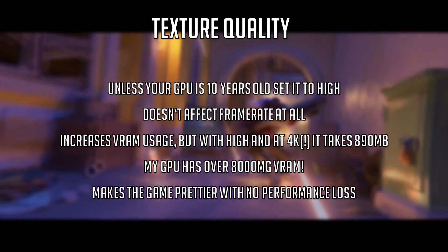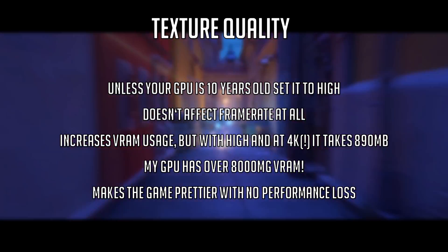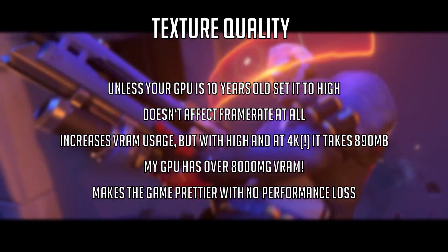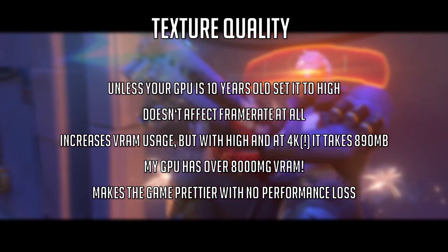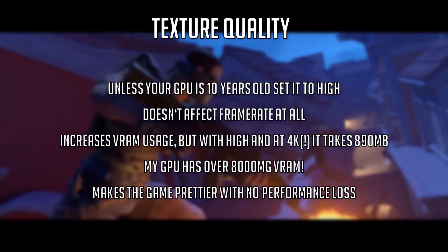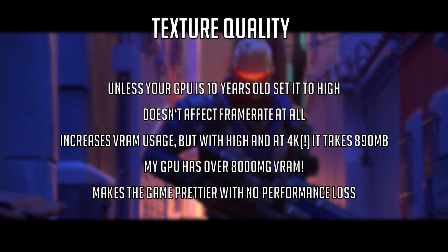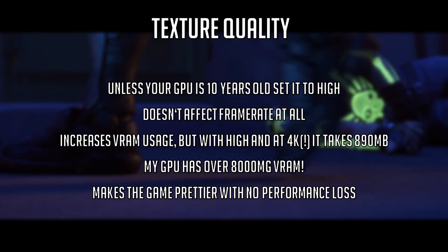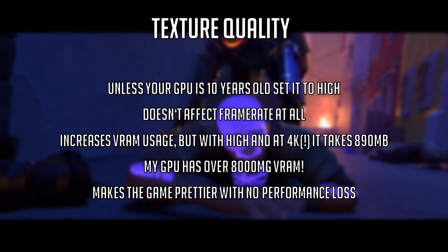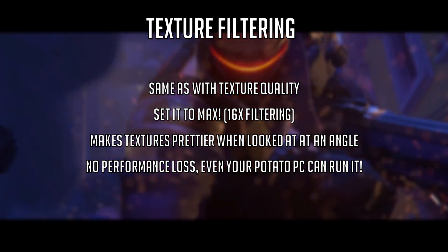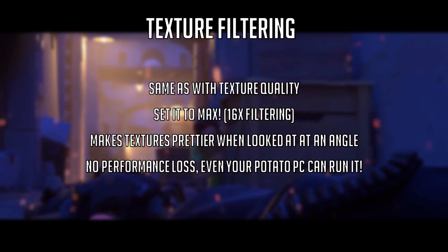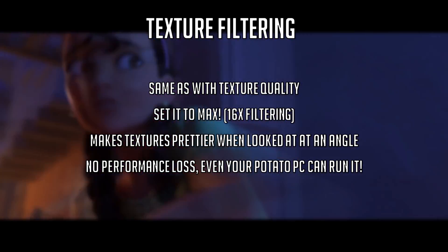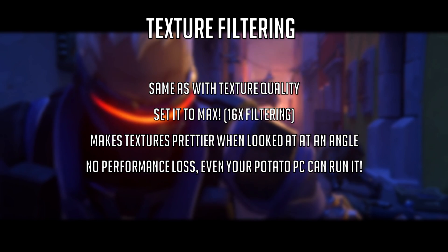Texture quality is a little simpler to explain. Unless your GPU is 10 years old, just set it to high. It doesn't affect your frame rate at all. It increases VRAM usage, but setting it to high and playing at 4K it only takes 890 MB, and my GPU has over 1000 MB of VRAM. So it makes the game prettier with no performance loss — in my opinion everyone should just have it turned to max. The same applies with texture filtering — just set it to max, which is epic 16x filtering. It makes textures prettier when looked at at an angle, and there's no performance loss. Even your potato PC should be able to run it.